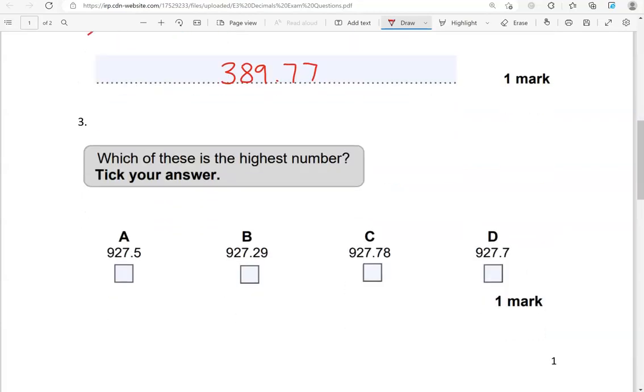Which of these is the highest number? So, we've got 927.5, 927.29, 927.78, 927.7. Just like in the first question, they have these digits in front of the decimal point being the same. So, 927, 927, 927, 927. For that reason, we need to focus on the digits after the decimal point.